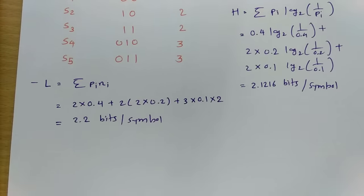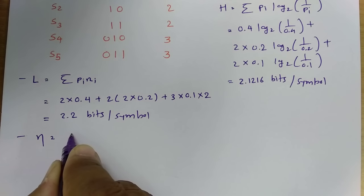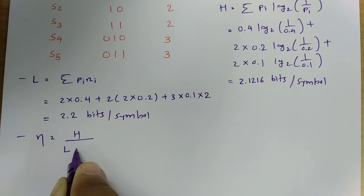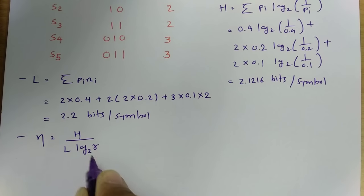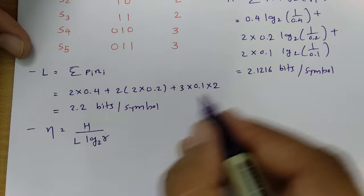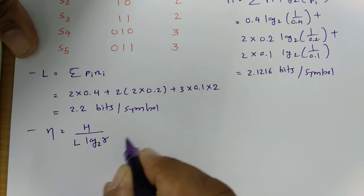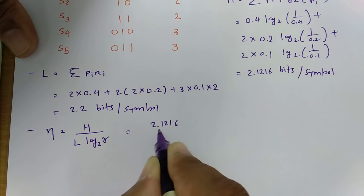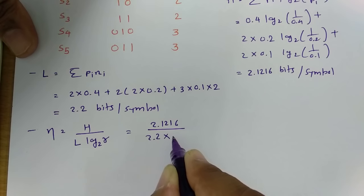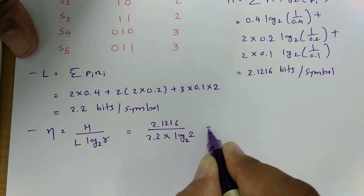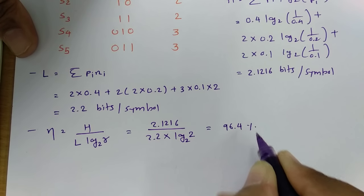Now we have entropy H and average length L, so we can calculate efficiency. Efficiency equals H divided by L times log base 2 of R. Here H is 2.126, L is 2.2, and R is 2 so log base 2 of 2 equals 1. Therefore efficiency equals 96.4%.